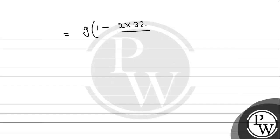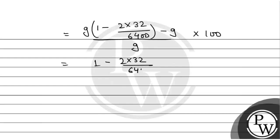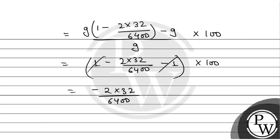Substituting: (1 - 2 × 32 / 6400) - 1, multiplied by 100. The g cancels out, and the 1 and -1 cancel, leaving: -2 × 32 / 6400 × 100. This gives us -1. The negative sign indicates a decrease in weight.